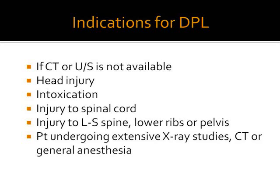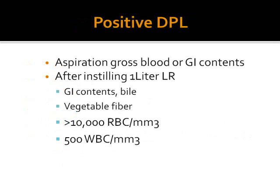If a patient is going to have extensive x-ray tests, CT scan, or is going for general anesthesia for another injury, we may need to do DPL to rule out abdominal injury before the patient goes on, because that will take more time. A positive DPL is if we aspirate gross blood or GI contents — if we aspirate about 10 ml of blood. After instilling one liter of lactated Ringer's or normal saline, if we get GI contents, bile, or vegetable fiber in the aspirate, all are suggestive of abdominal injury.